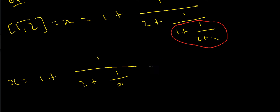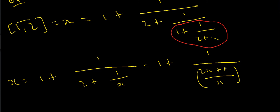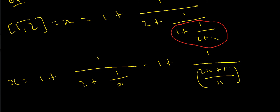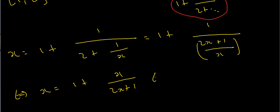Let's simplify. We have 2 + 1/x = (2x + 1)/x, and the reciprocal of that is x/(2x + 1). So this tells us that x = 1 + x/(2x + 1). Subtracting 1 from both sides gives x − 1 = x/(2x + 1).